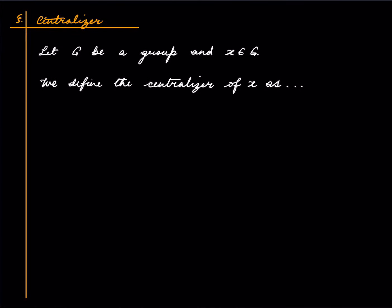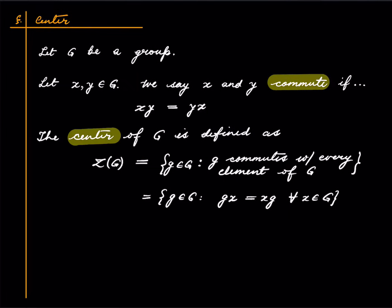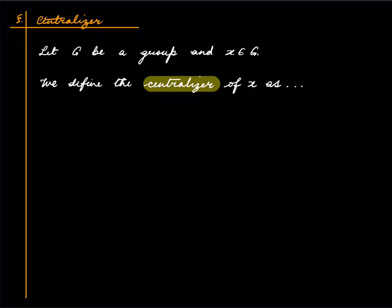A related notion is that of the centralizer of an element. So fix a group G and some element in the group x. We define the centralizer of x. The centralizer of x is defined as those elements in the group which commute with x.